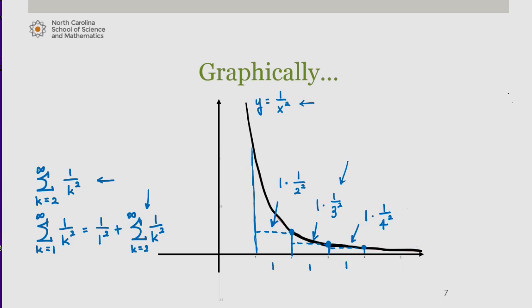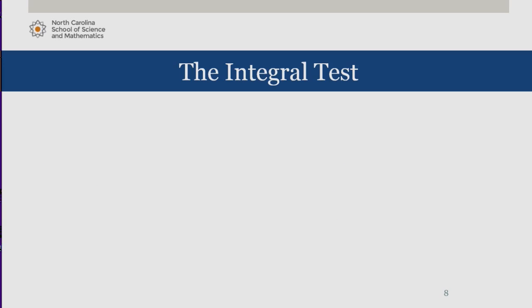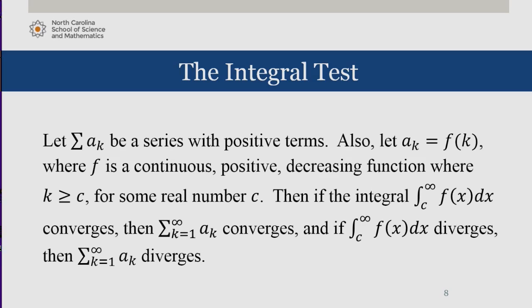This should give us a sense of why the integral test works. The test is quite powerful, as it gives us a definitive answer about whether a series converges or diverges. The challenge is knowing when the test is appropriate to use — if we can integrate the associated function f of x, then the test is a good candidate. In summary, the integral test tells us that if the series a sub k has positive terms, and a sub k equals f of k, where f is a continuous, positive, decreasing function where k is greater than or equal to some real number c, then if the integral from c to infinity of f of x dx converges, so does the associated series. And if the integral diverges, then so does the associated series.